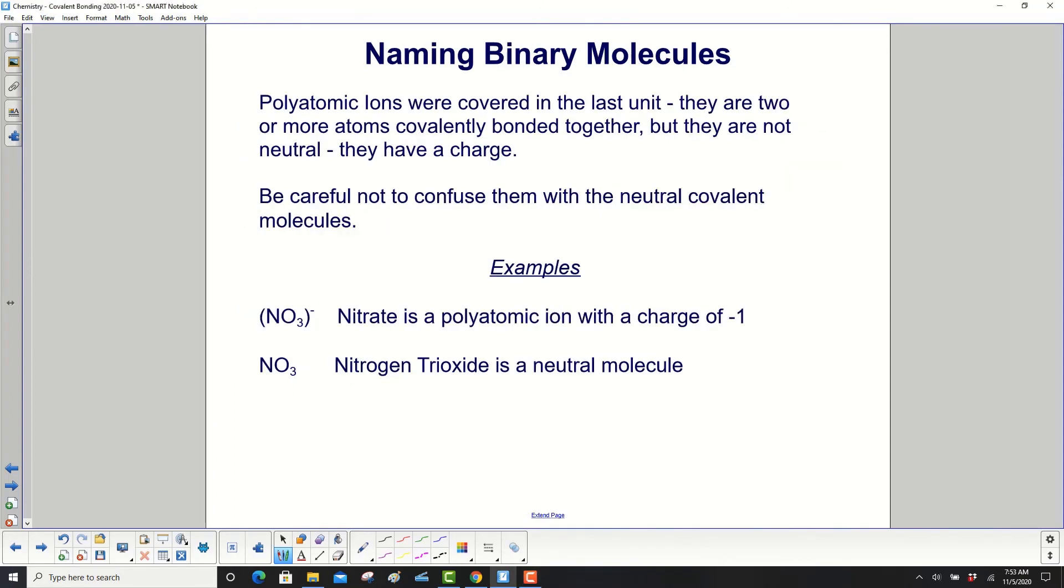Polyatomic ions were covered in the last unit. They are two or more atoms covalently bonded together, but they are not neutral. They have a charge, hence the term ion. Be careful not to confuse them with the neutral covalent molecules.